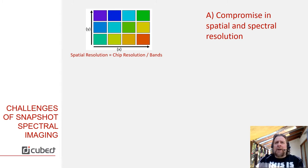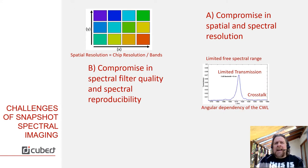The first challenge is we have a compromise in spatial and spectral resolution with snapshot systems. The spatial resolution of snapshot systems is always the chip resolution divided by the number of bands. Furthermore, we have compromises in spectral filter quality and spectral reproducibility, which come due to the high complexity of the systems. And we have a lot of miniaturization going on, which produces significant manufacturing tolerances.